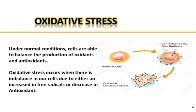Oxidative stress. Under normal conditions, cells are able to balance the production of oxidants and antioxidants. Oxidative stress occurs when there is an imbalance in our cells, due to either an increase in free radicals or a decrease in antioxidants. This figure shows how cells are attacked by free radicals and converted into damaged cells.